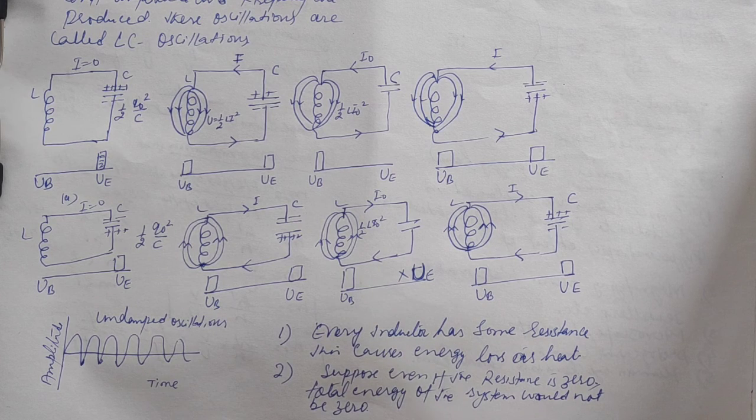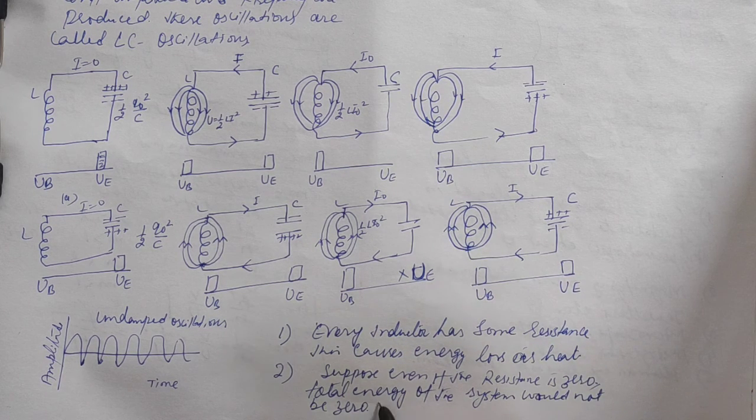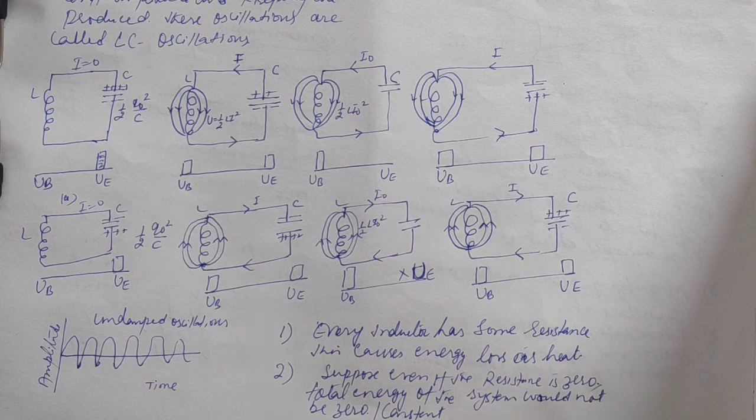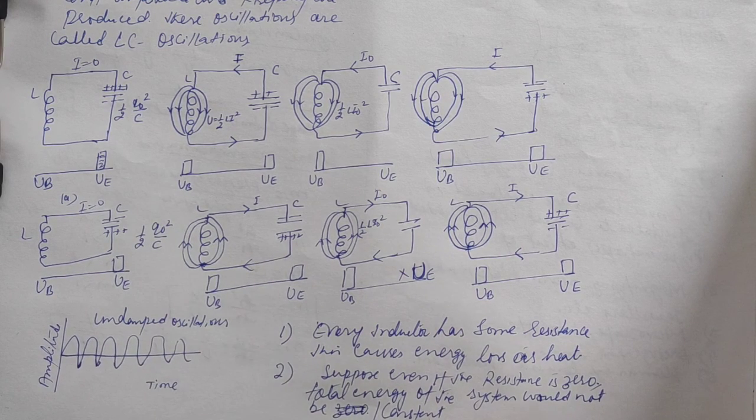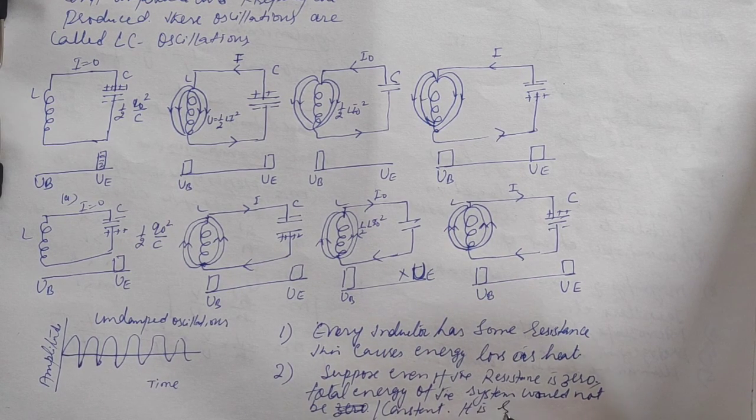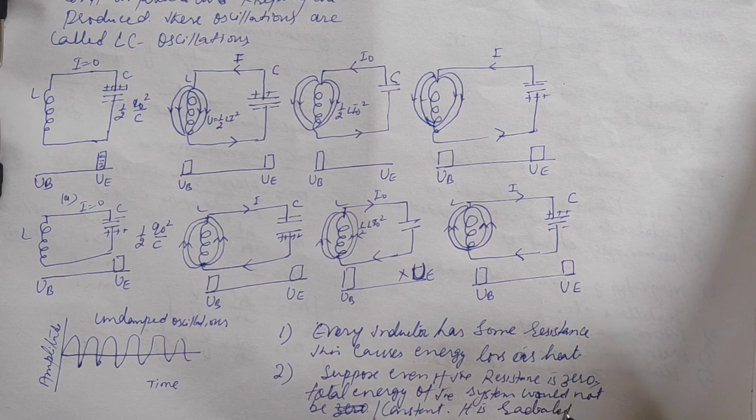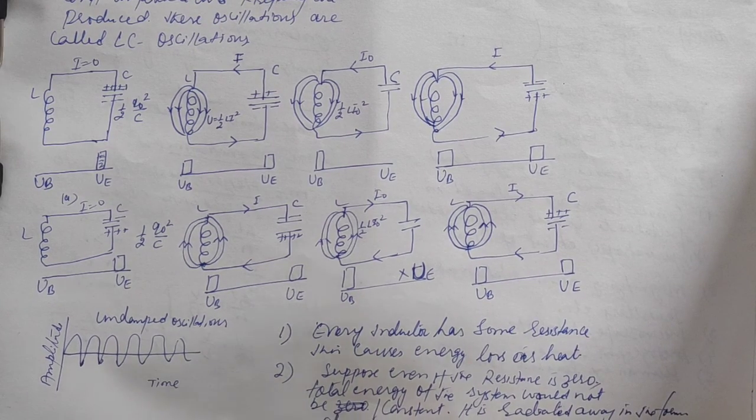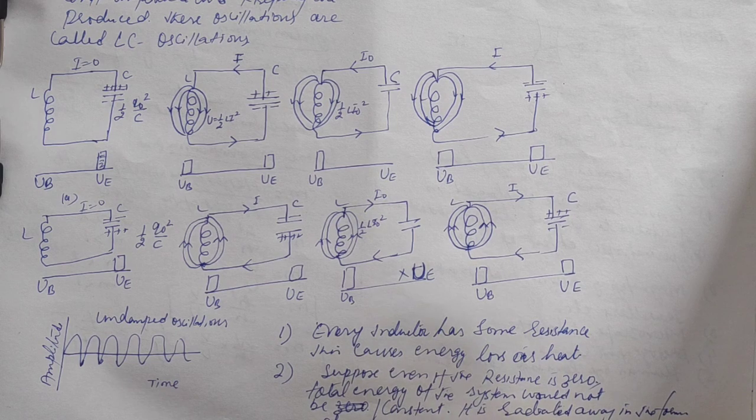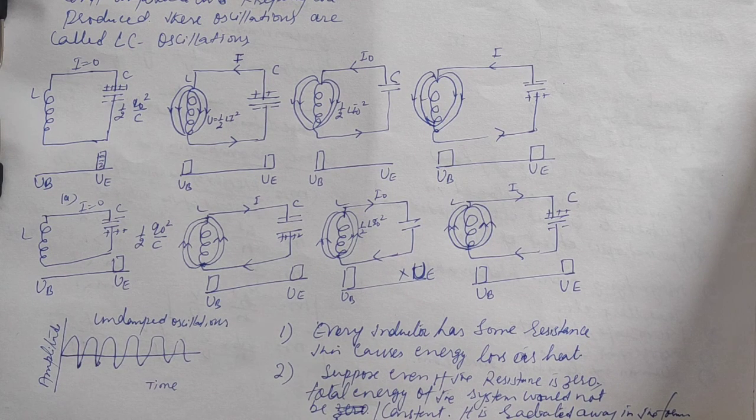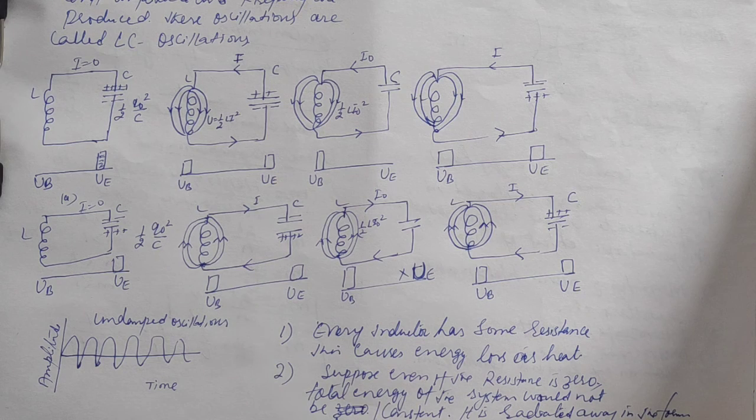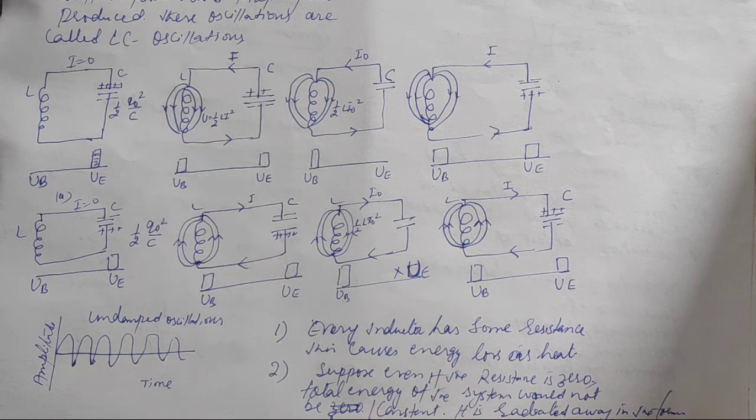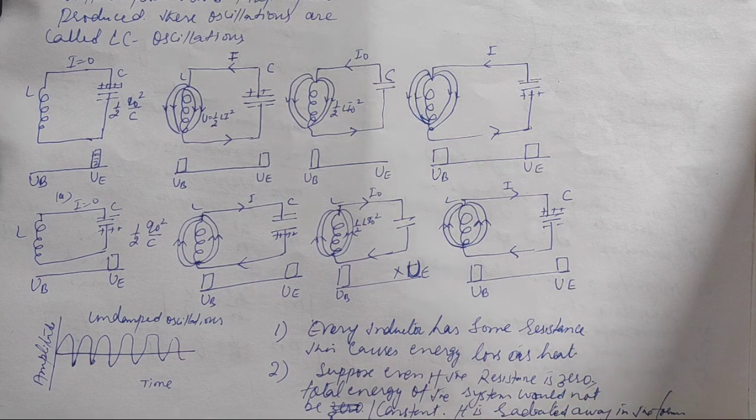The total energy of the system would not remain constant because it is radiated away in the form of electromagnetic waves. Every oscillating particle produces electromagnetic waves. So even if resistance were zero, the total energy would not remain constant—it is radiated in the form of electromagnetic waves.